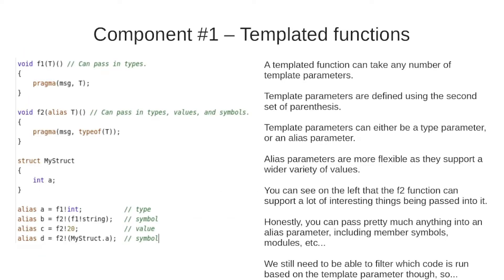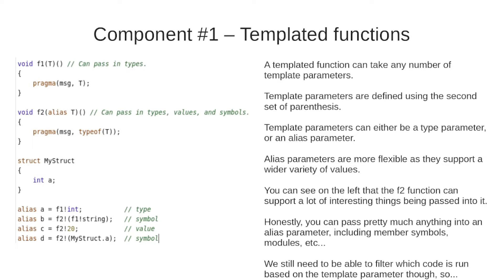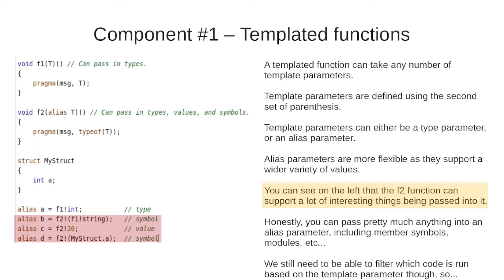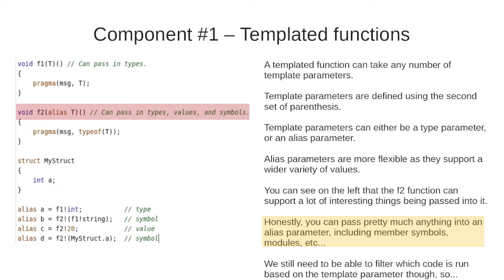The next component is templated functions. A templated function can take any number of template parameters, which are defined using a second set of parentheses. The first set of parentheses offers template parameters; the second set offers runtime parameters. Template parameters can either be a type parameter or an alias parameter. Alias parameters are more flexible as they support a wider variety of values — you can pass pretty much anything into an alias parameter including member symbols, modules, values, etc.